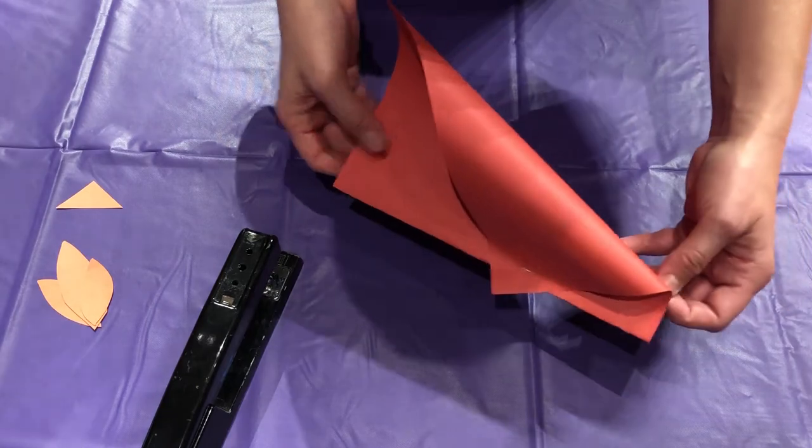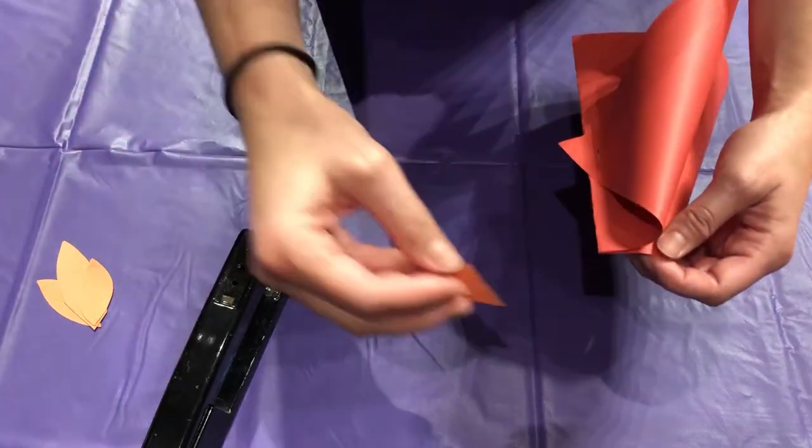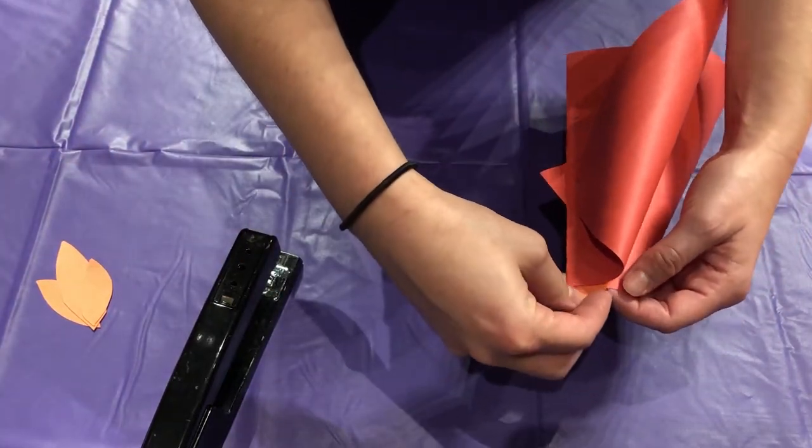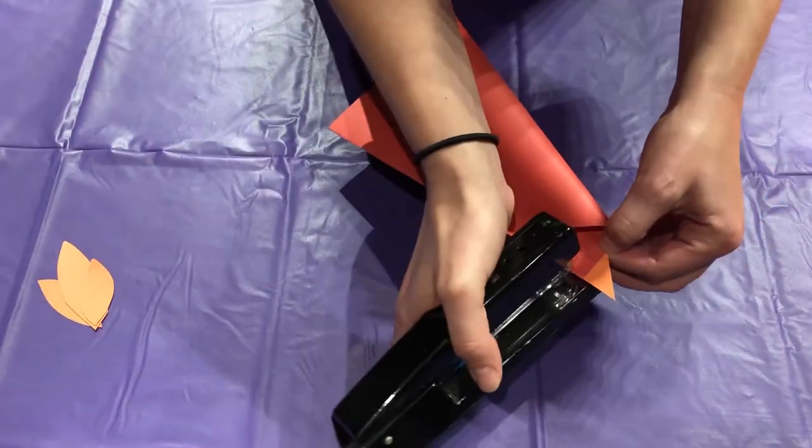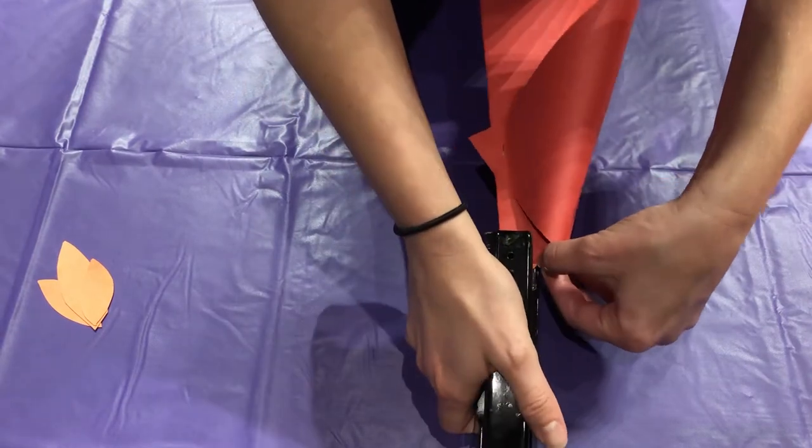Next you're going to take the beak that you've already cut out and place it right there in the front. And then take your stapler again and staple it there.